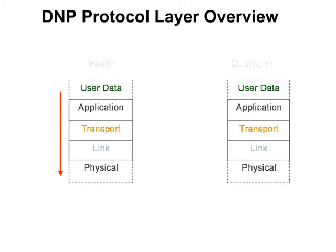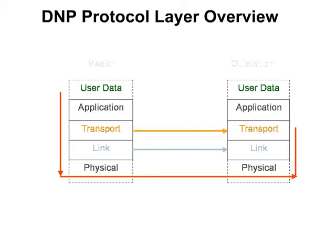When receiving, each layer examines the data for the specific information for that layer and processes the message appropriately. That layer's information is then removed from the message, and the message is passed up the stack to the next higher layer for further processing. The net effect is layer-to-layer communications.